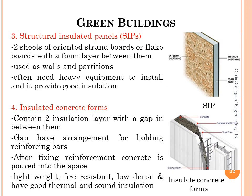The third is structural insulated panels, commonly called SIPs. These consist of two sheets of oriented strand boards or flake boards with a firm layer in between them. They are available in large sizes and are used as walls and partitions for structures. Because of their size, they often need heavy equipment to install. However, they provide good insulation.